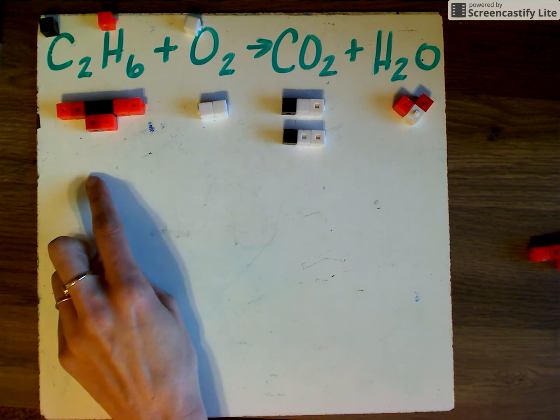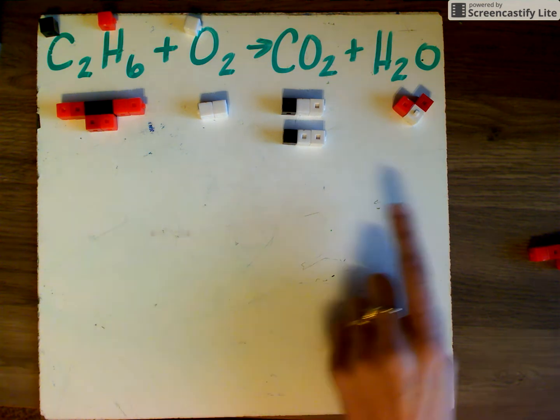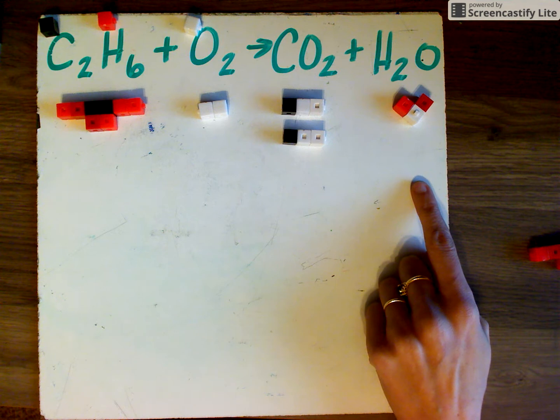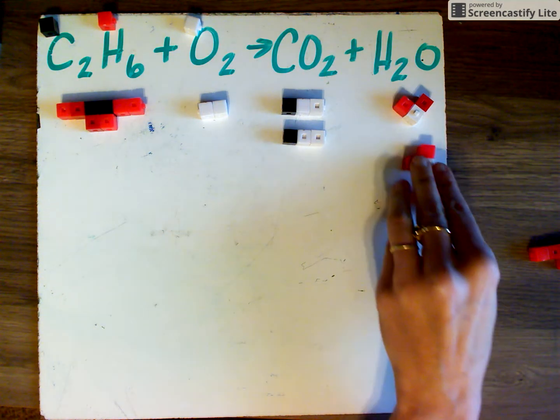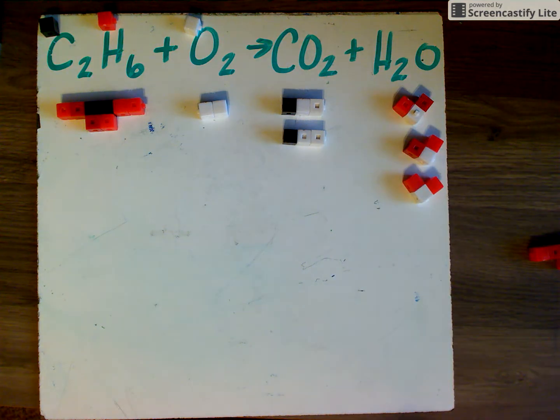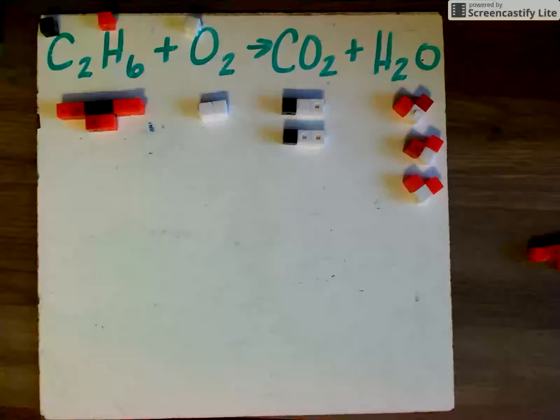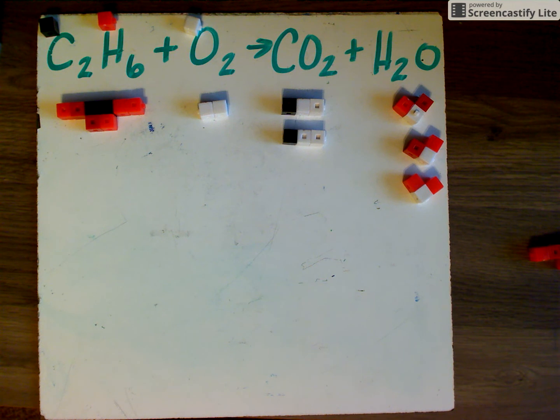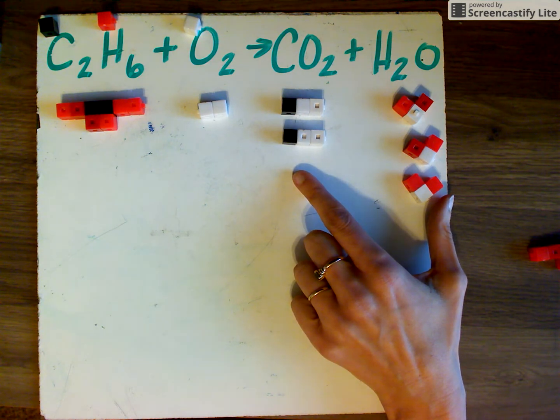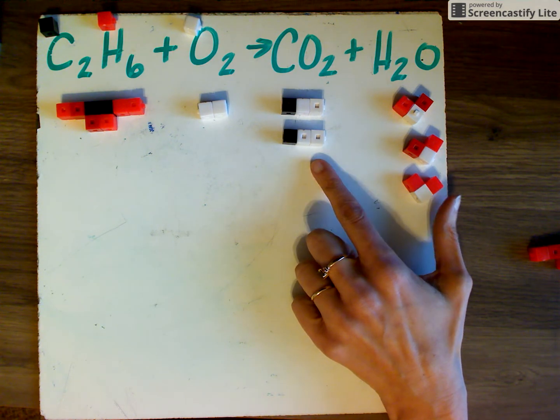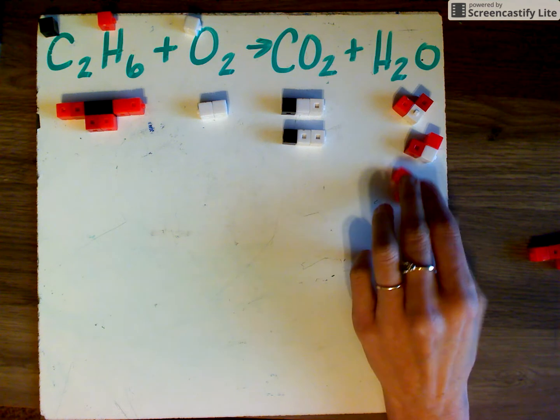We have six hydrogen atoms in the reactant. So we need six hydrogen atoms in the products. We can get this by having three water molecules. So now we have C2H6 plus O2 makes two CO2 and three H2O. Now we have seven oxygen atoms in the products. So seven in the product. Four from the CO2 and three from the H2O.